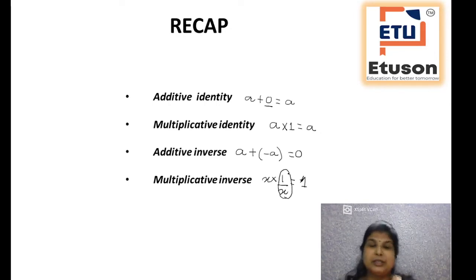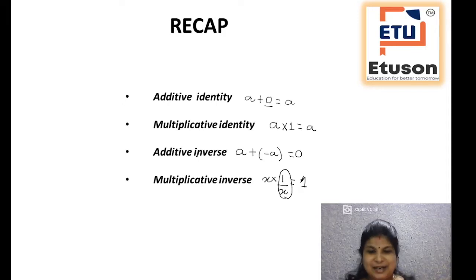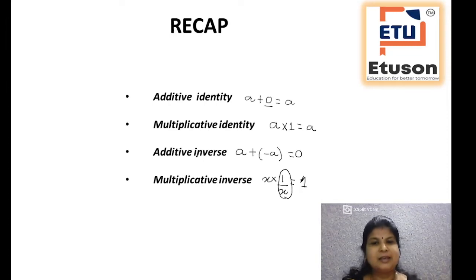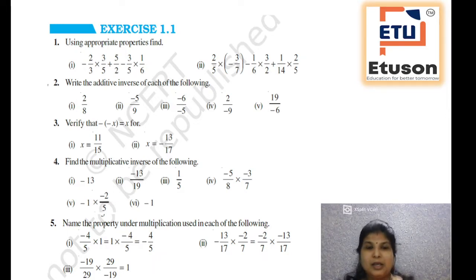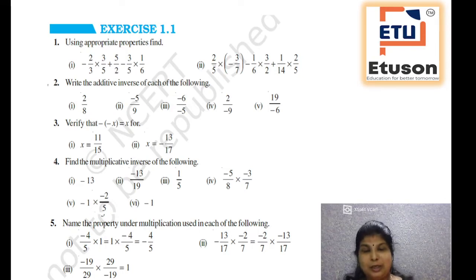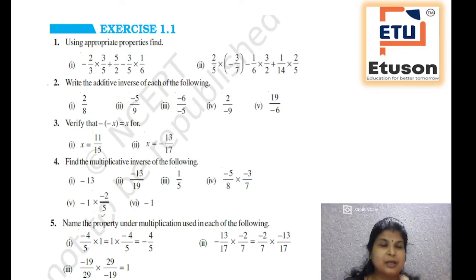Now using the properties of rational numbers and also these important facts, we are going to solve problems from Exercise 1.1. Are you ready with your pen and paper? Let us start doing the exercise. This is the exercise question — I have taken it from your book. Today we are going to solve from question number 1 to 5. I am not going to solve each one of them. Rather, I will solve few of them and give few as your assignment so that you will complete them. Any doubt, please get back to me.